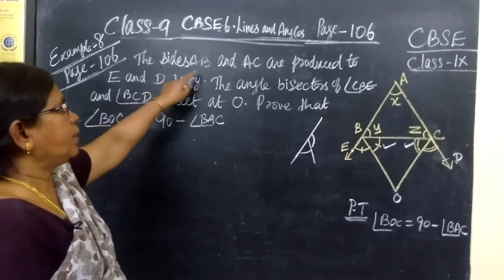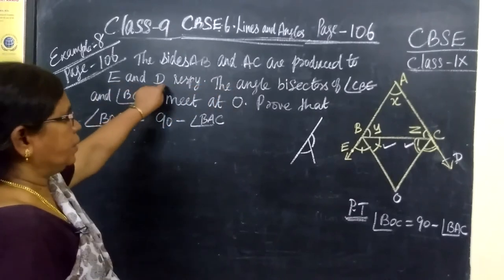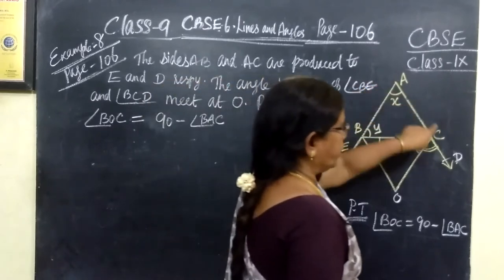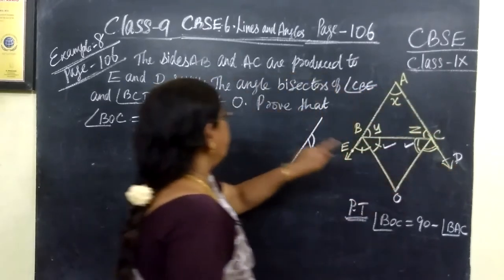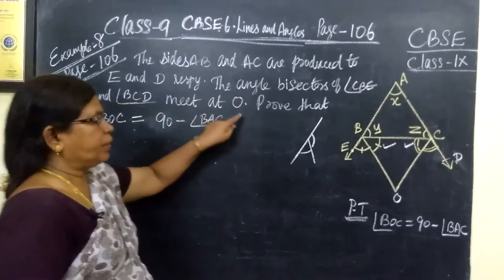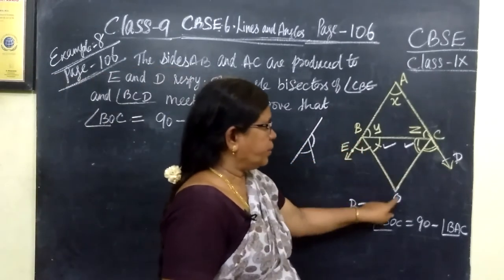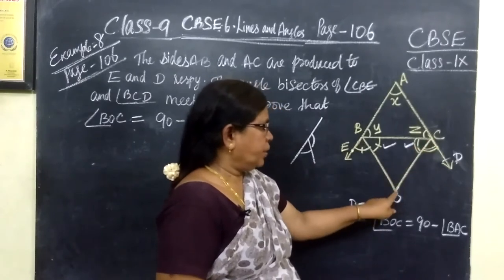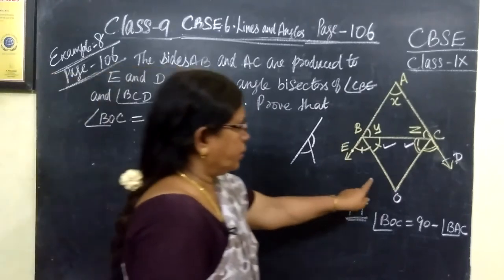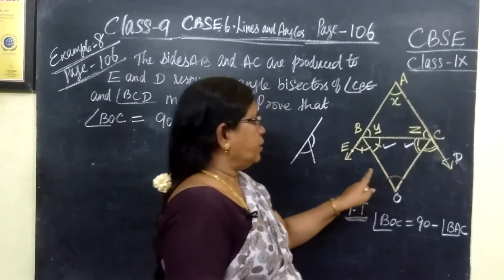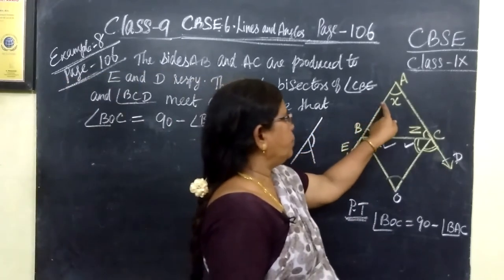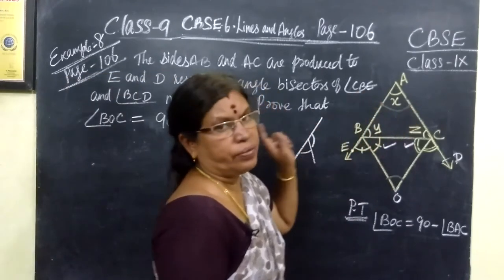The sides AB and AC are produced to E and D. The sides AB produced to E and the sides AC produced to D. Then another one, the angle bisectors of CBE and BCD meet at O. This is the angle bisector and this is the angle bisector, they meet at the point O. And you have to prove angle BOC, that is this angle. This angle is equal to 90 minus angle BAC. This we want to prove.